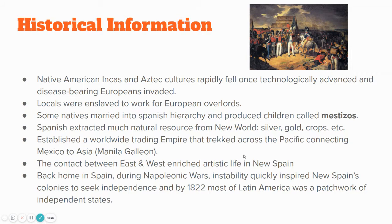Locals were enslaved to work for European overlords. Some natives married into Spanish hierarchies, and together they produced children called mestizos. The Spanish extracted tons of local natural resources from the New World, such as gold and silver — precious metals that were mined — as well as crops such as corn. There became a lot of trade between the old world and the new world, establishing a worldwide trading empire.